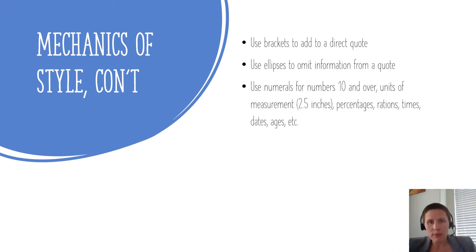Regarding grammar, there have been changes. In the past, you had to use third person narrative completely. APA has updated with the world developing. It is now okay to use first person narrative in your paper—you can say I, me, my, we, our. It is okay to use the singular they as the generic third person. So rather than saying Max went to his or her birthday, we can say Max went to their birthday. There's only one space necessary at the end of your sentences.